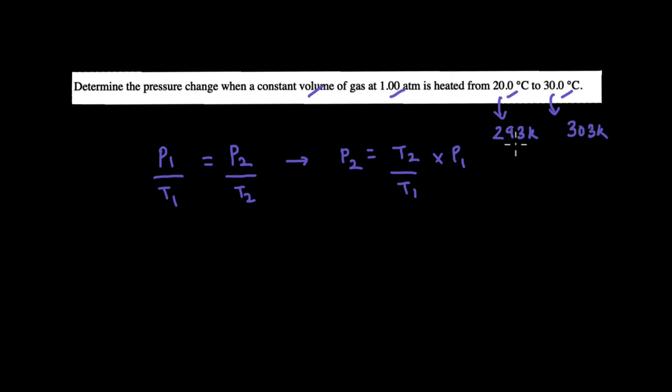And so we can substitute these two temperatures and the initial pressure in this equation to calculate P2, which is 303 divided by 293 into 1.0 atm. And if you solve this, we get P2 to be 1.03 atm.